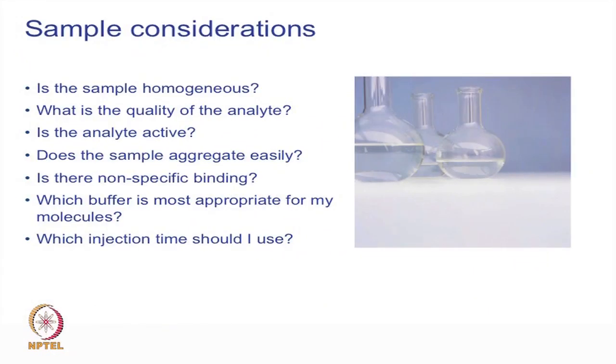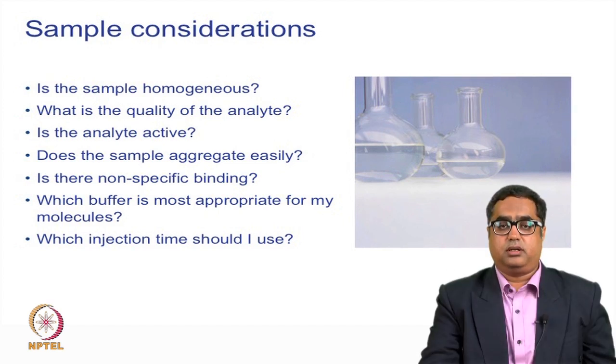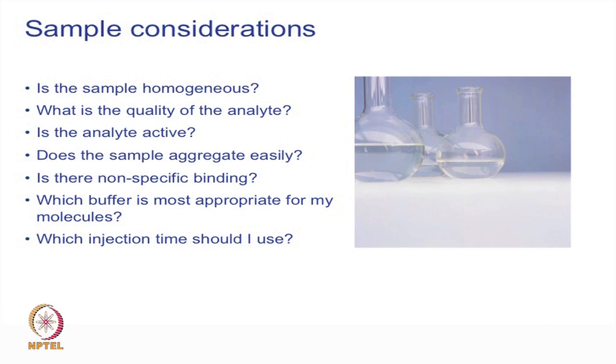The sample or analyte is a major contributor to bad data. It is very important that we purify and characterize them before experimentation. Homogenous samples are good enough to be considered - make sure your samples are highly homogenous, good quality, active, do not aggregate, and do not give non-specific binding. It is also very important to understand the right buffer for a right sample and, once good sample conditions are identified, to think about the association time and when to set up Biacore experiments.